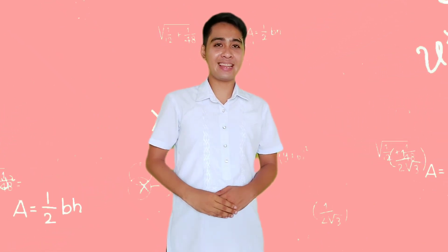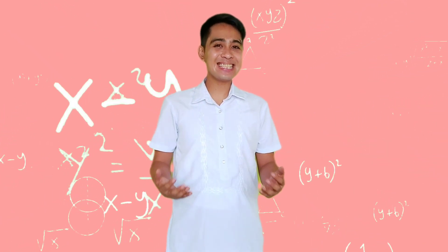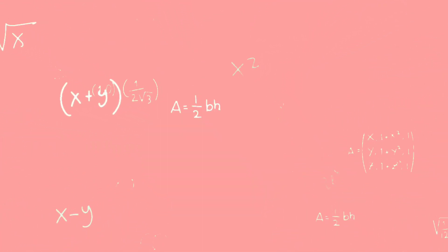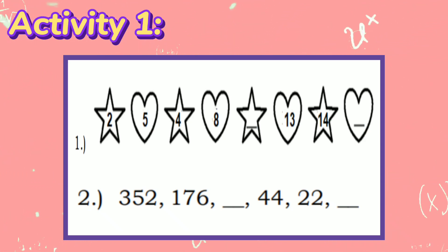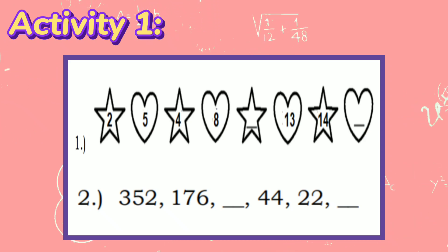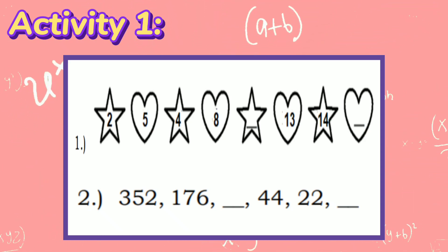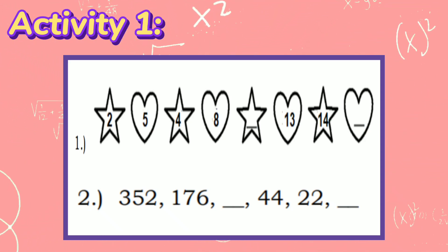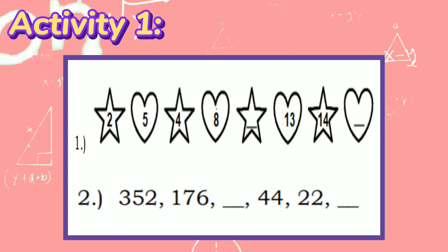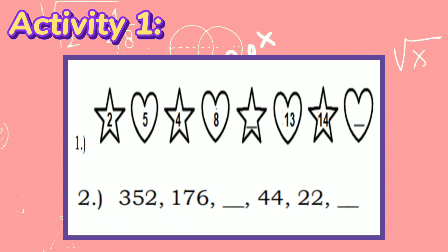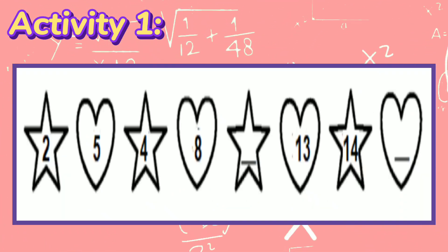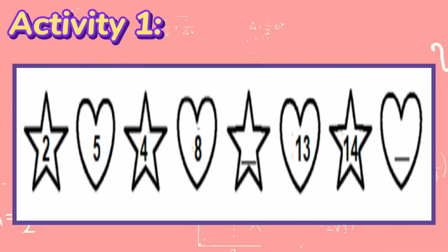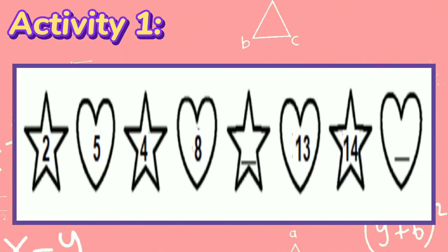To know more about the lesson, let's have these activities. Find the missing term or terms in the given number sequence. To determine the missing terms, we will follow the steps we learned. In the first number sequence, the given terms are inside two different shapes — a star and a heart.